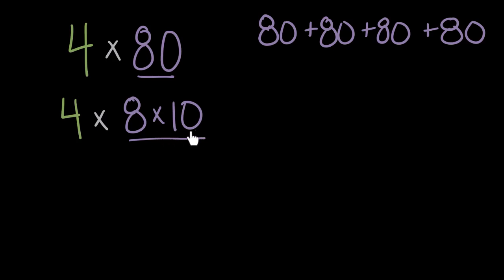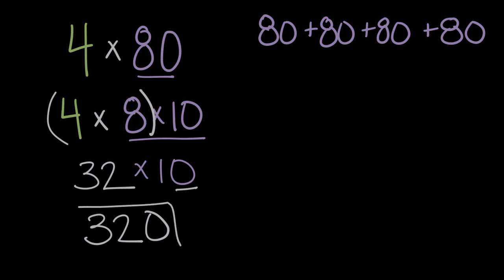And then we have this times 10 back here, which is super helpful, because there's a nice neat pattern in math that we can use to help us with the times 10 part. So let's start to solve this. Four times eight is 32. And then we still have 32 times 10. And then we can use our pattern for multiplying by 10, which is that any time we multiply a whole number times 10, we take that whole number, in this case 32, and we add a zero to the end. So 32 times 10 is 320.